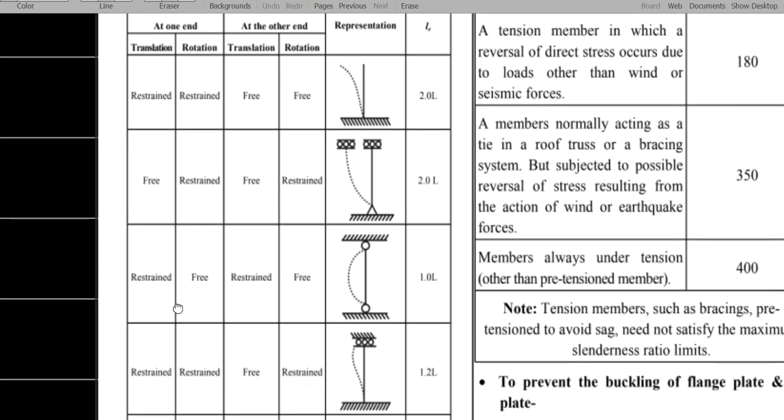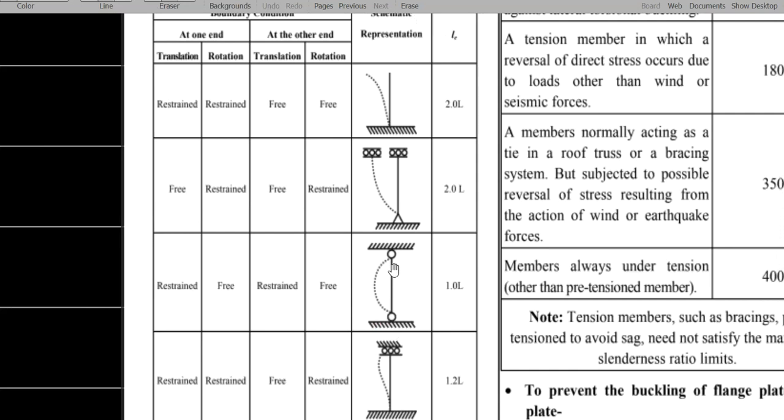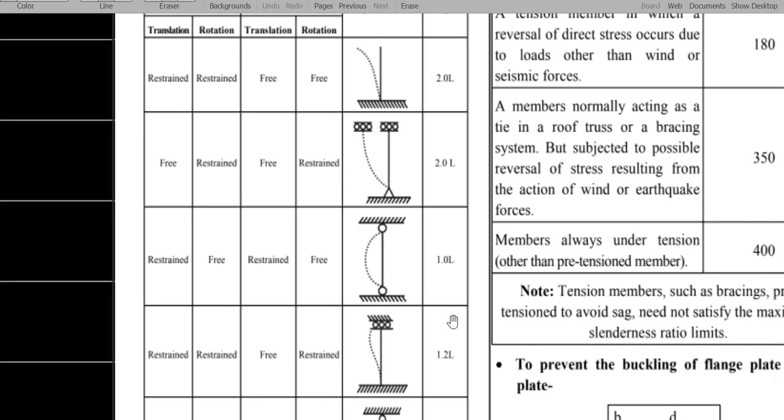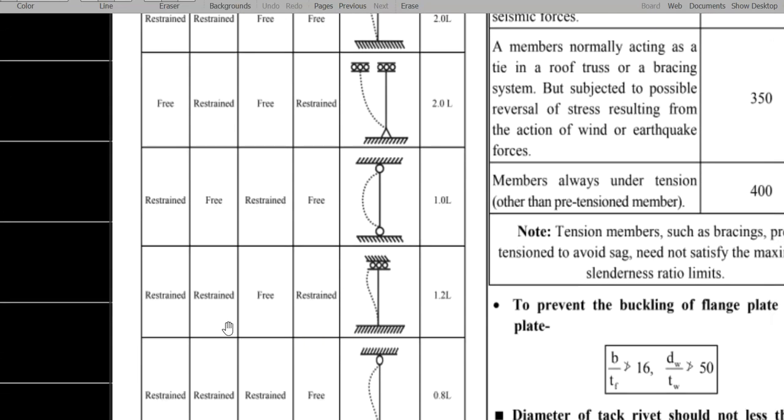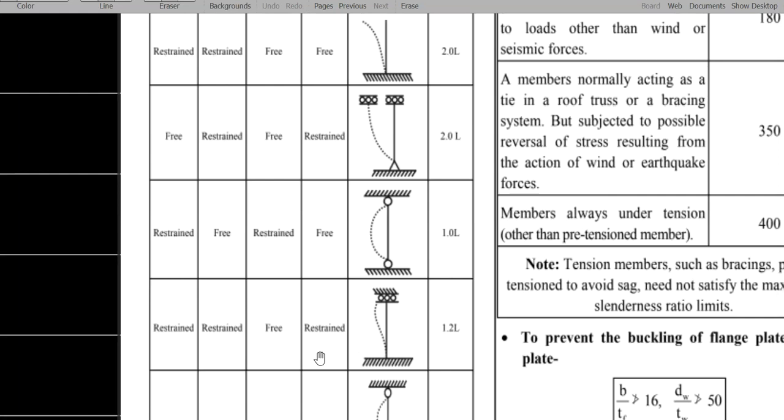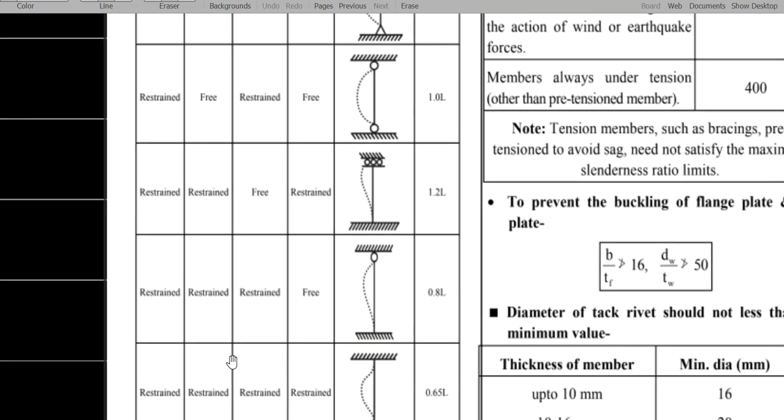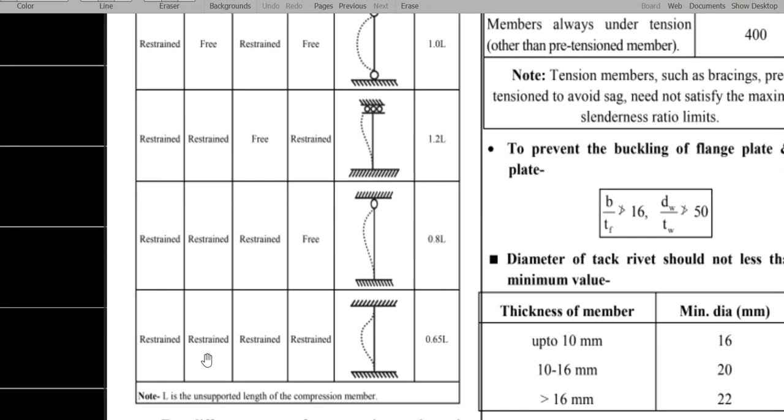One end is translation motion is restrained but rotation is free. That means hinge connection. Then, at the other end, restrained and free. We have both ends fixed, this one is 1.2L. Both ends fixed, we have 0.8L. Both ends fixed, we have compression member is 0.675L. So, if both the ends is fixed, then what is the effective length for a compression member? The answer will be 0.675L.